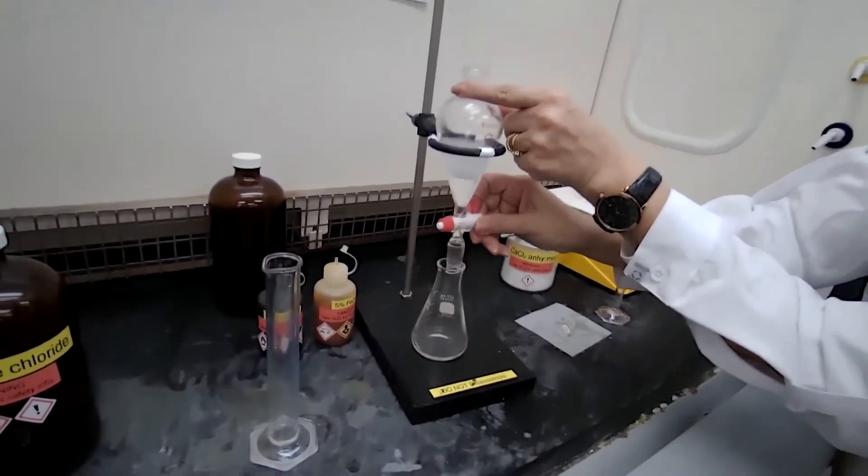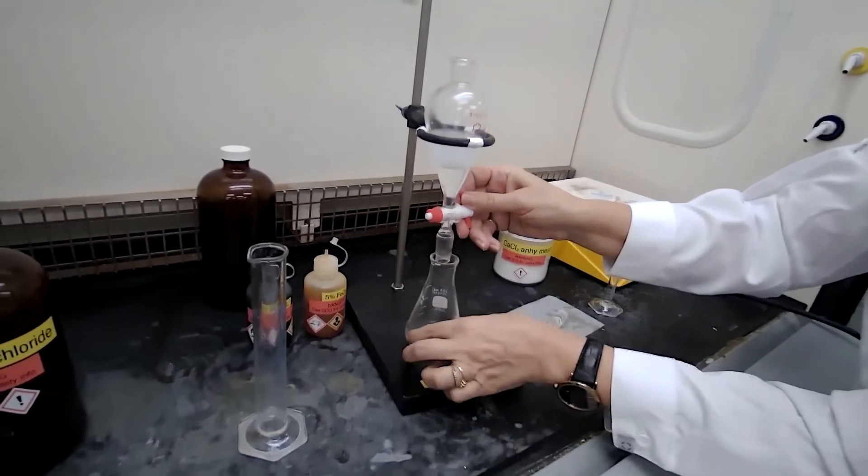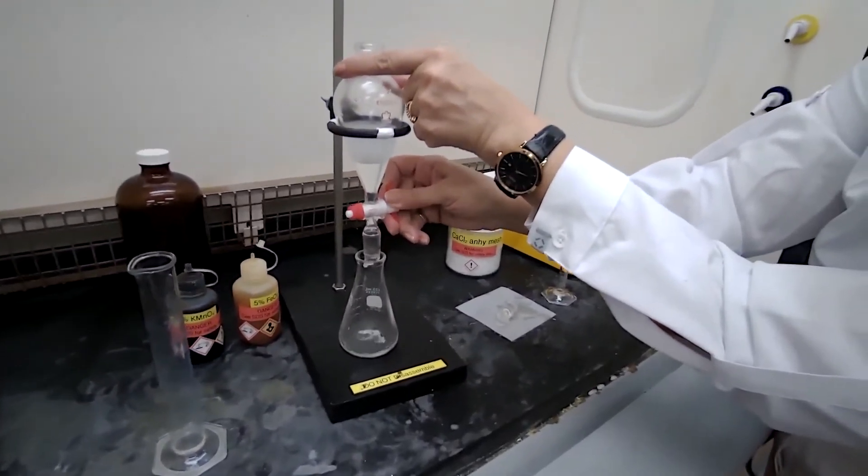Remove the second layer one more time and collect in the same flask that we have our first portion of methylene chloride.